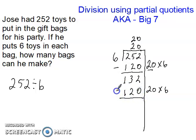And then I'll subtract and see how many toys I have left. 2 minus 0 is 2, 3 minus 2 is 1, and the hundreds are gone. So that leaves 12 toys. With 12 toys I can do 2 bags of 6 toys each. That 2 also goes up here. 2 times 6 takes the last 12 toys.